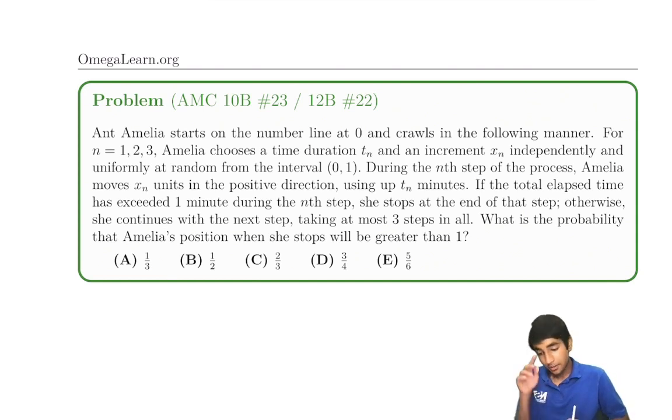Ant Amelia starts on the number line at 0 and crawls in the following manner. For n equal to 1, 2, or 3, Amelia chooses a time duration t_n and increment x_n independently and uniformly at random from the interval (0,1). During the nth step of the process, Amelia moves x_n units in the positive direction, using up t_n minutes. If the total elapsed time has exceeded 1 minute during the nth step, she stops at the nth step.